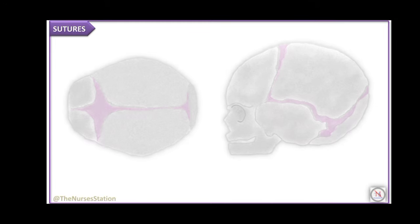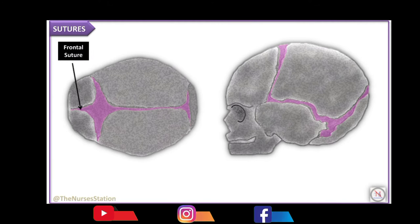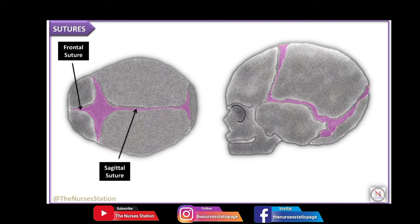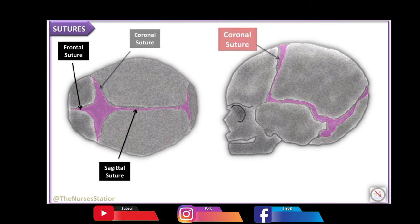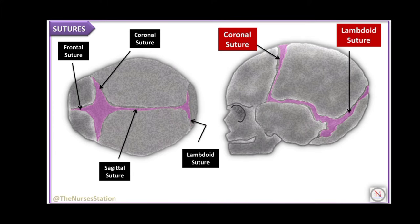The flat bones of the vault are united together by non-ossified membranes attached to the margins of bones. These are called the sutures and the fontanelles. The sutures of obstetric importance are the frontal suture between the two frontal bones, the sagittal or longitudinal suture between the two parietal bones, the coronal sutures between parietal and frontal bones on either side, the lambdoid sutures between the occipital bone and two parietal bones, and the squamo-parietal suture between the temporal bone and the parietal bone. The sutures permit gliding movement of one bone over the other during childbirth, known as molding.